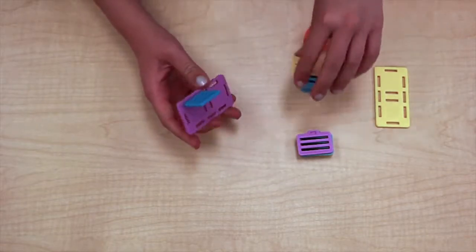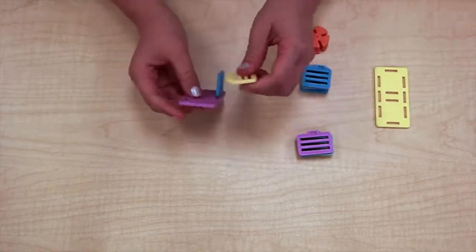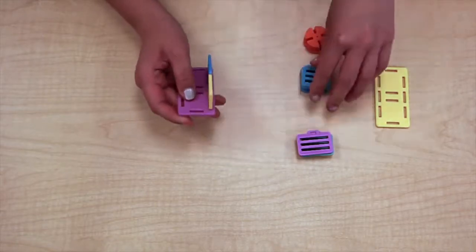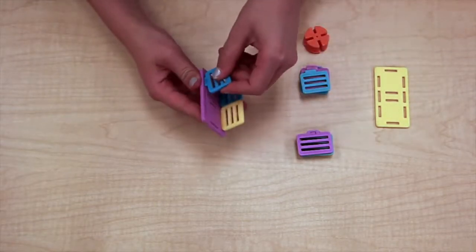Take the piece with the tab towards the edge and snap it onto the long rectangular piece so that the tab is facing the edge. Do this to all other sides.